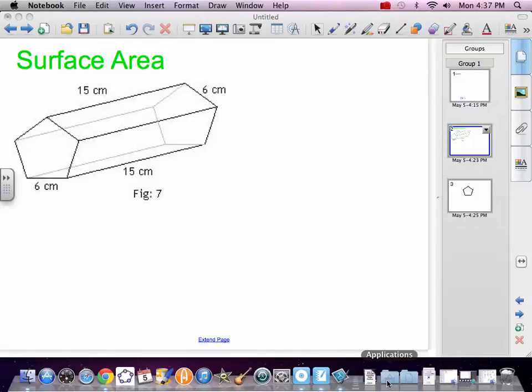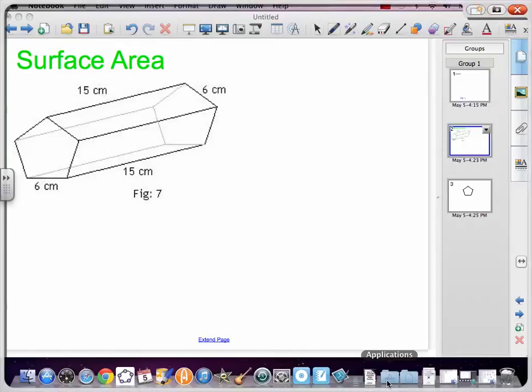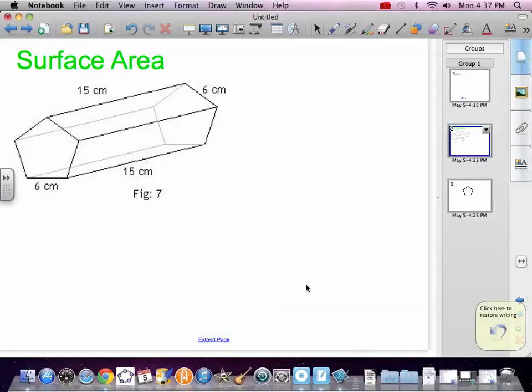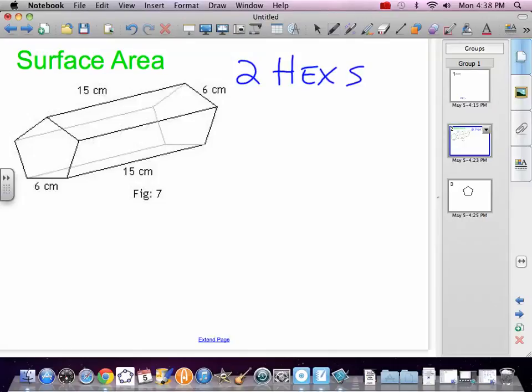Regular tells us that all the sides of the pentagon are the same. So 6, 6, 6, 6, 6. For the surface area, I count all the surfaces. We have two hexes and we have five rectangles.